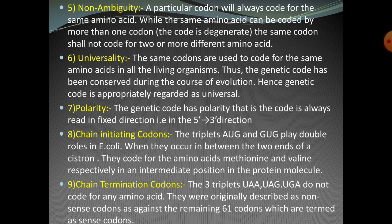The seventh characteristic is polarity. The genetic code has polarity — that is, the code is always read in a fixed direction, from the 5 prime to the 3 prime direction on the mRNA strand.